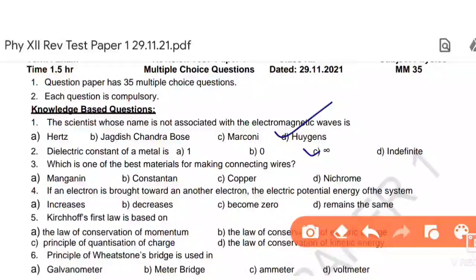Next, the electric constant of a metal is infinity. Right answer. Most important, the paper has come. Which one is the best metal for making connecting wires? In any lab, you can use the connecting wires. So the answer is copper.